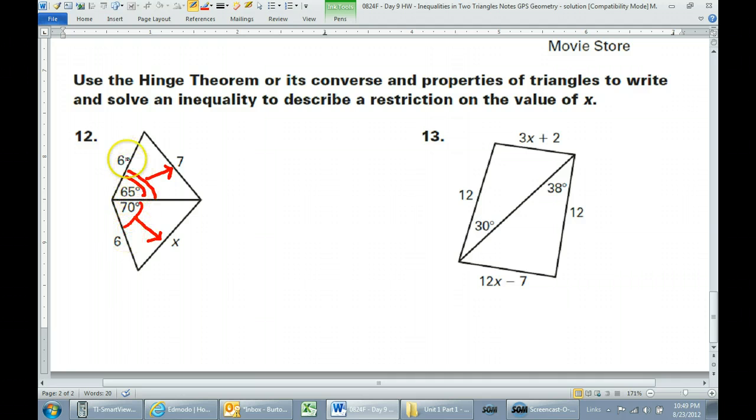Since we have congruent sides, the 6's are congruent and the shared side is congruent. So given that, the bigger side will be across from the bigger angle. If 70 is bigger than 65, then x is going to be bigger than 7.